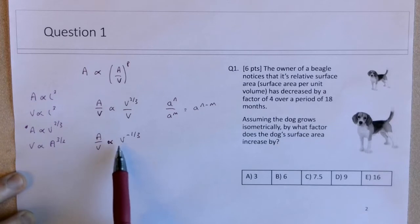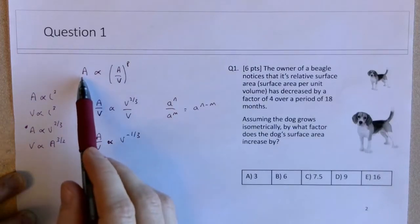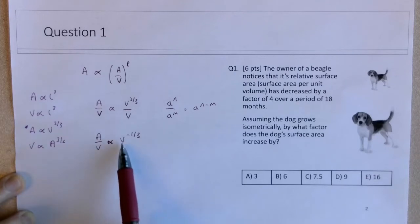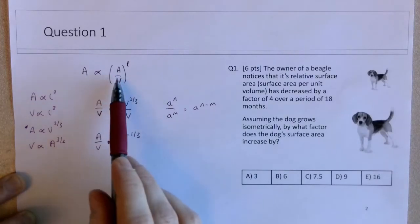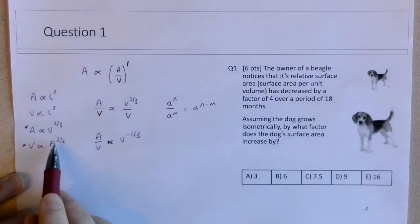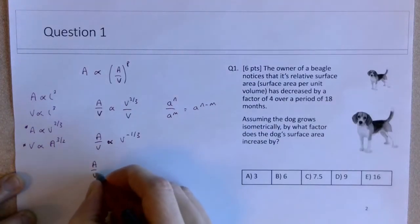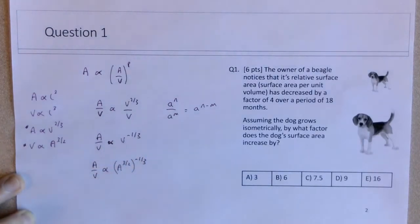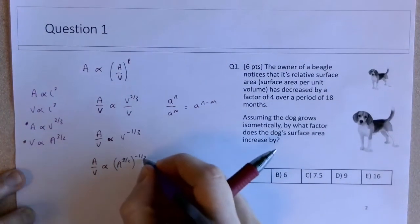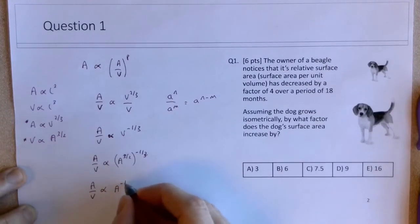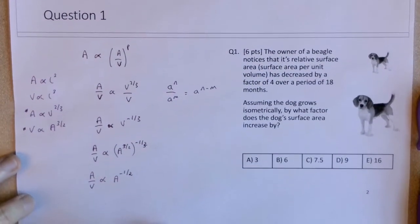But technically, what I want to do is have here is A over V in terms of A. Now, we do have these equations over on the left, so I guess we will need them at some point. So here I have A over V in terms, so the relative surface area in terms of V. Ideally, what I want is A over V in terms of A, or vice versa. So here I'm going to use this equation here, knowing that V is proportional to A to the three-halves, we could then state that A over V is proportional to A to the three-halves, all raised to the negative one-third. And here, these threes will cancel. So A over V is proportional to A to the negative one-half. Now we're almost finished here.